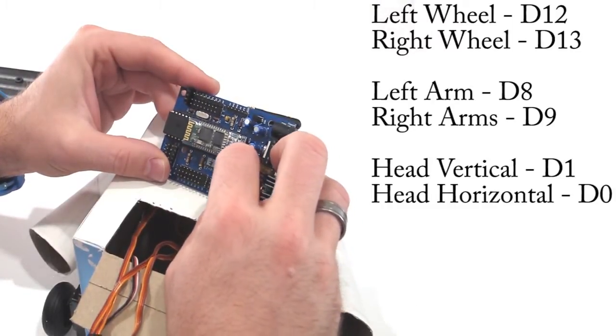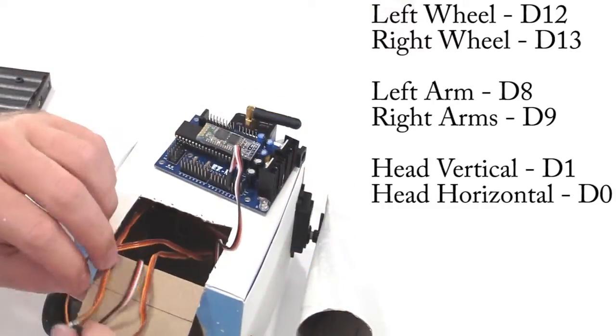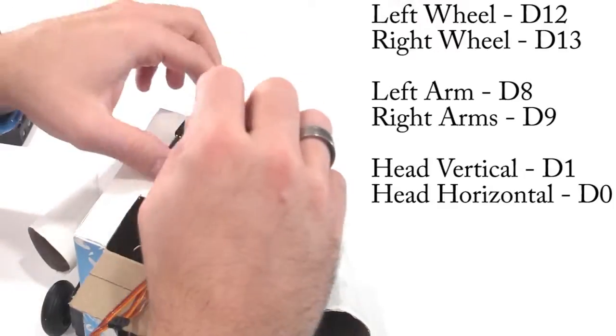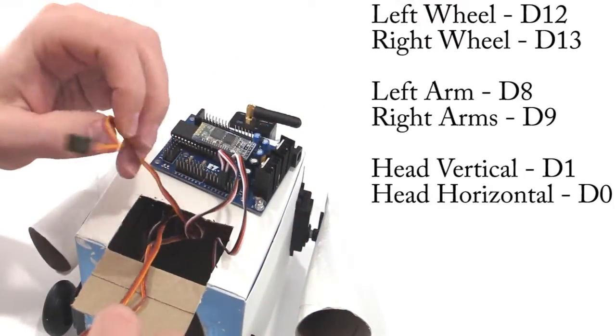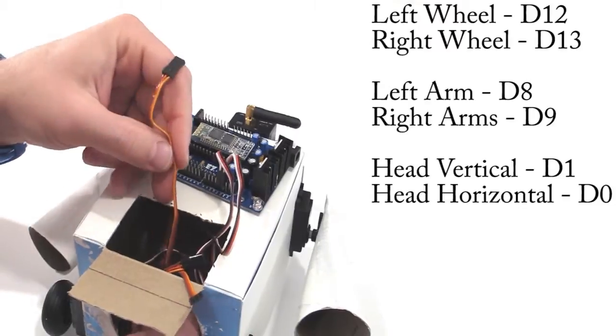Locate the left wheel servo cable and connect to port D12, with a dark wire towards the inside of the controller. Connect the right wheel servo cable to port D13.